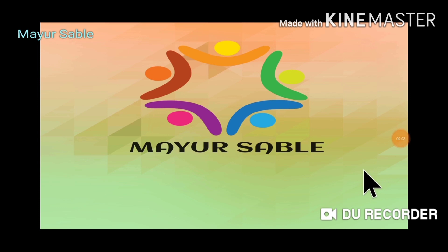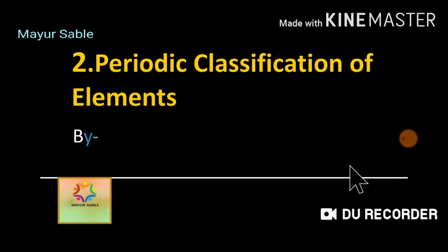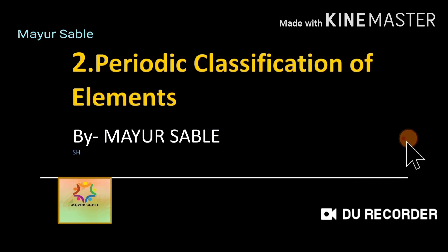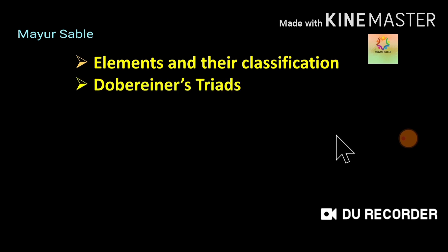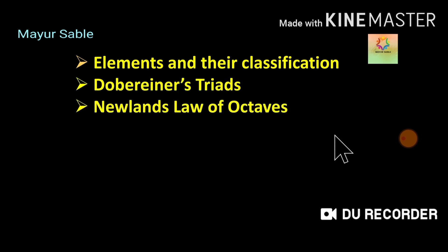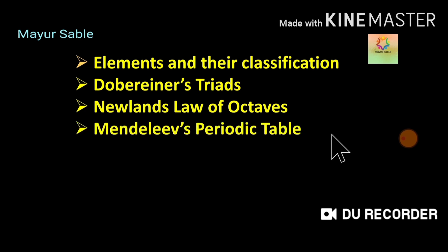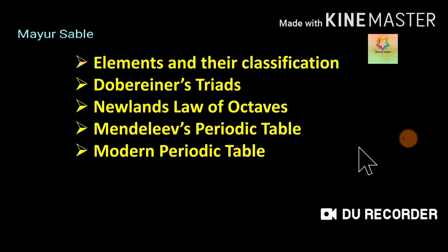We are going to learn the various aspects related to the periodic classification of elements. In this chapter, we will deal with the elements and their classification, then Dobereiner's Triads, then Newlands' Law of Octaves, then Mendeleev's periodic table and the modern periodic table. In the modern periodic table, we will also study the various periodic trends seen in the elements.